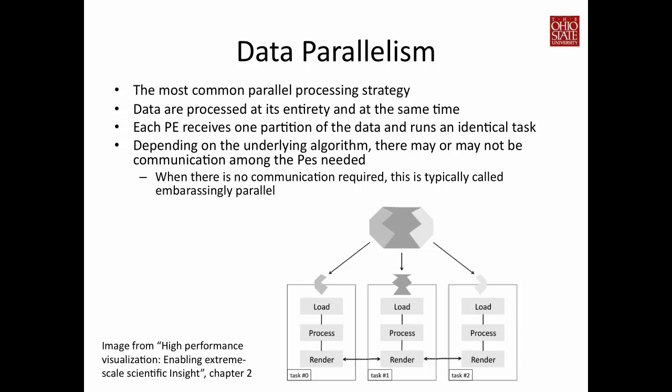This diagram shows that we divide the data into many small pieces and each processor loads or acquires its data from a master data node. Once they receive the data, they run the same process to generate analysis or visualization results. After that, in the case of visualization, we need to produce images through rendering. There may be communication among processors needed to combine the results into a single image, which is why the render boxes show arrows indicating inter-processor communication.